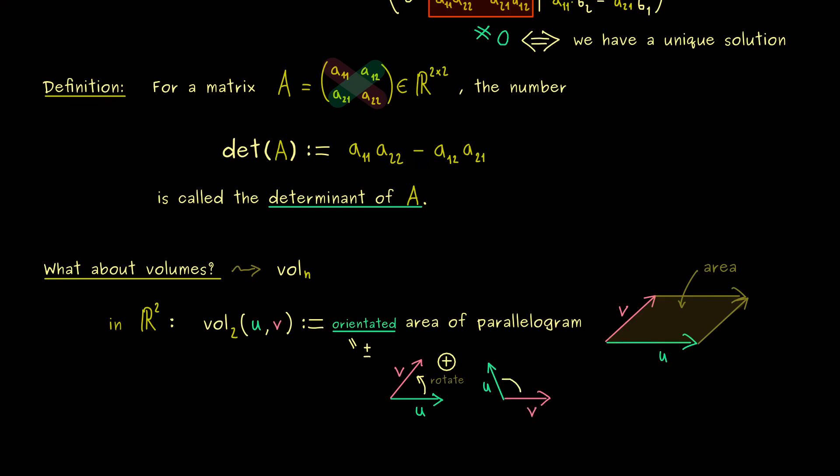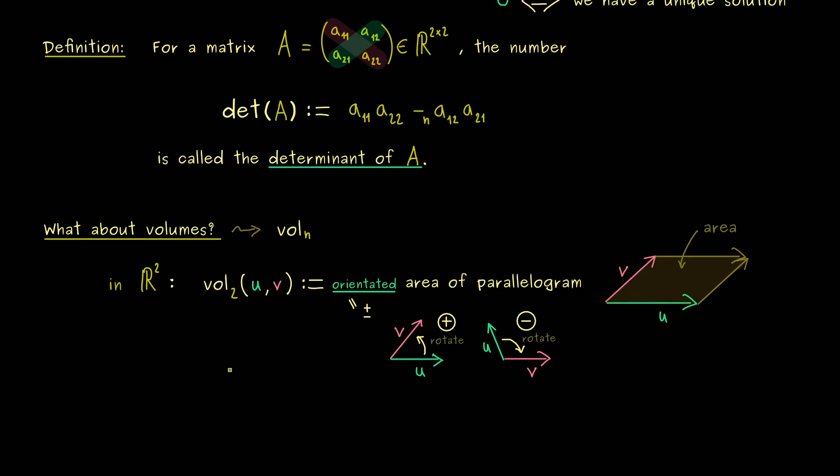Hence, the opposite picture would be that we have to rotate u in the negative sense. So we still rotate u and we want to make the angle smaller. Hence, in this example it goes clockwise, so in the negative sense. And that's all. So this is how we define orientation for two vectors in R2. And with that we can give the area of the parallelogram an additional sign. And with that we have a so-called orientated two-dimensional volume.